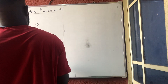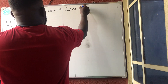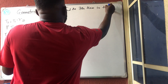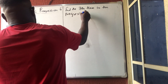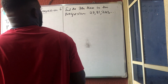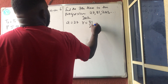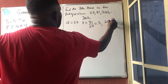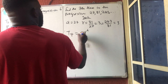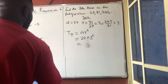Number six: first check if it's a GP or AP. r = 81/27 = 3, and 243/81 = 3, so it's a geometric progression. T7 = a·r⁶ = 27 × 3⁶. Do the calculation and get your result.